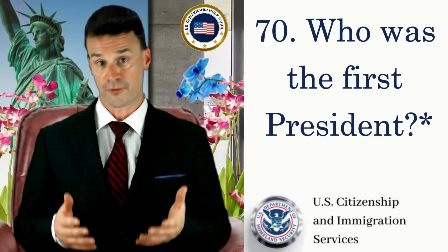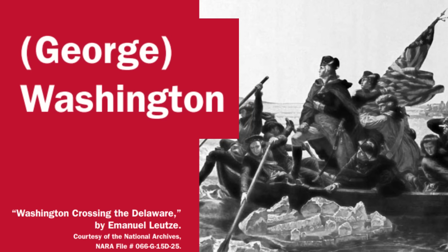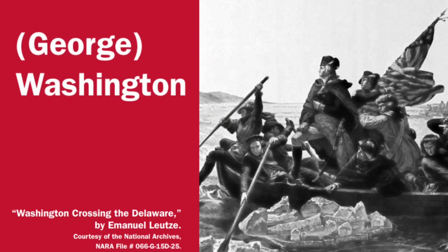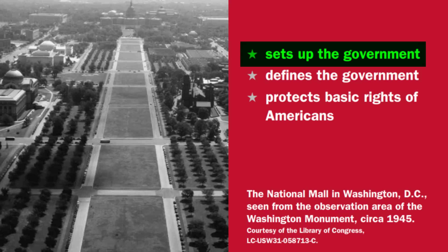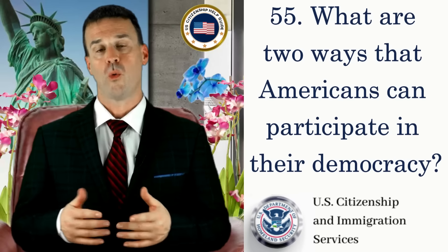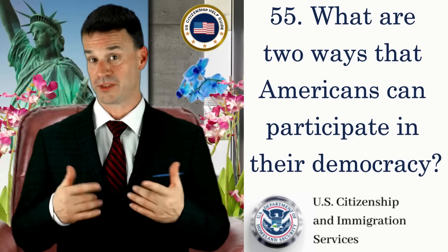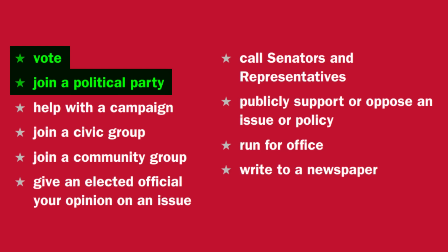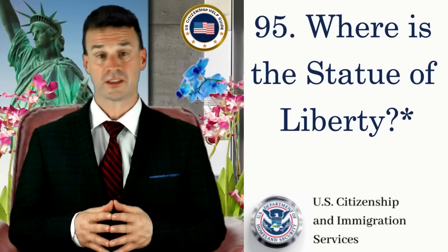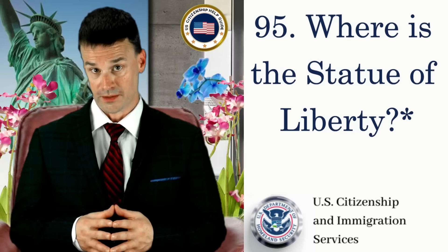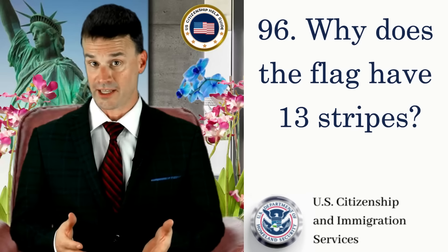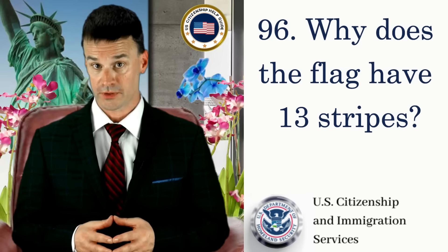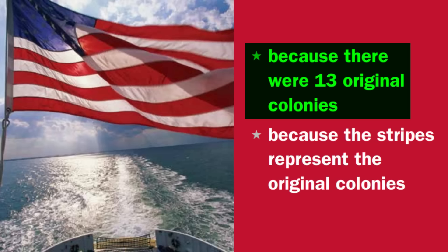Who was the first president? George Washington. What does the Constitution do? Sets up the government. What are two ways that Americans can participate in their democracy? Vote. Join a political party. Where is the Statue of Liberty? New York Harbor. Why does the flag have 13 stripes? Because there were 13 original colonies.